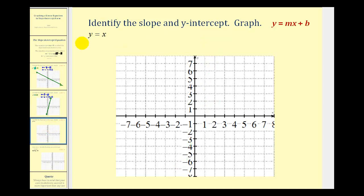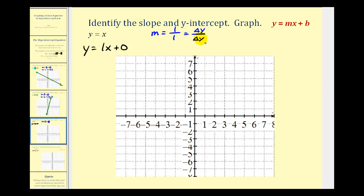Let's take a look at another example. Here we have y equals x. Remember, m is the coefficient of x and b would be the constant. We can rewrite this as y equals one x plus zero, which means the slope is equal to one — written as one over one, the ratio of the change of y to the change of x. Since b is equal to zero, the y-intercept is the point zero, zero. We'll plot the y-intercept at the origin, and then because the slope is one over one, we'll go up one and right one, repeating this several times. Our line passes through these points.